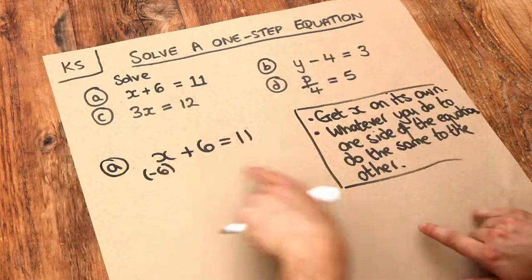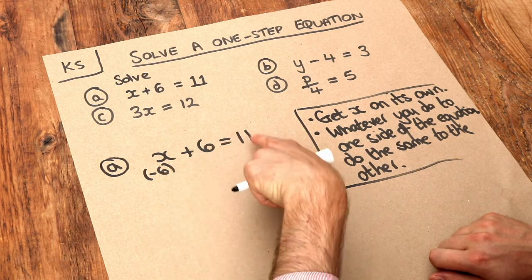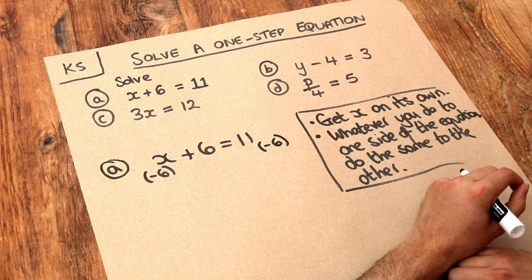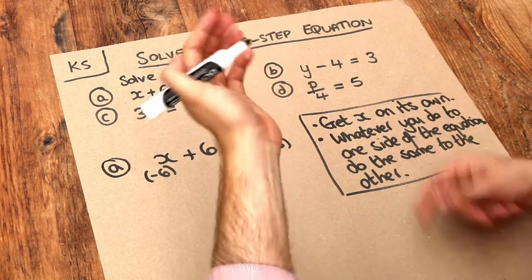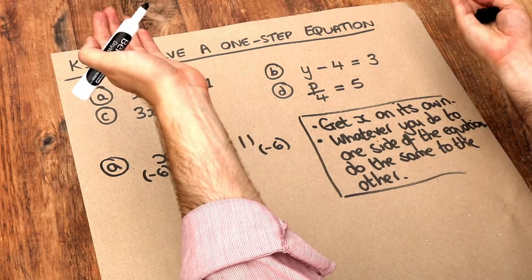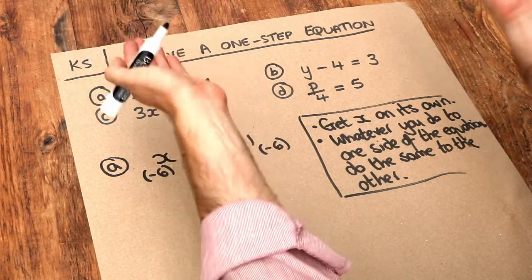But as per these instructions, whatever you do to one side of the equation, you have to do the same to the other. So I'm also going to minus 6 from the other side of the equation. It's a balancing act. Imagine if you took 6 weights from the left side of the scales, you'd also have to take away 6 weights from the other side, so they still balance.